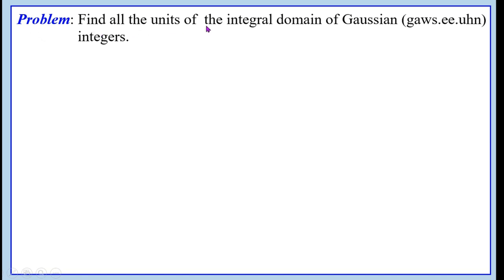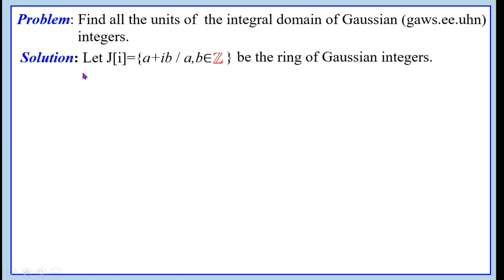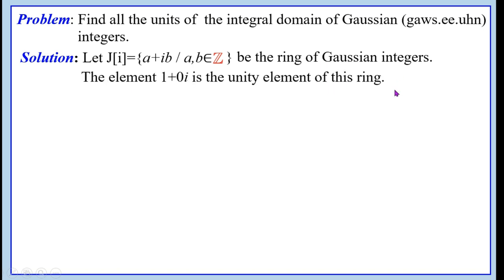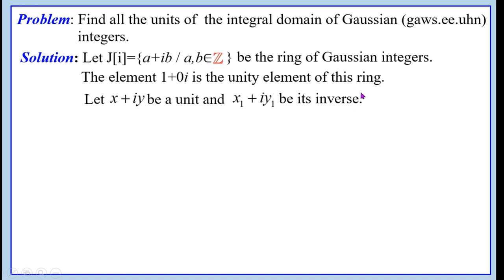Problem: Find all the units of the integral domain of Gaussian integers. Solution: Let J(i) = {a + ib : a, b ∈ Z} be the ring of Gaussian integers. The element 1 + i·0, namely 1, is the unity element of this ring. Let x + iy be a unit and x₁ + iy₁ be its inverse.